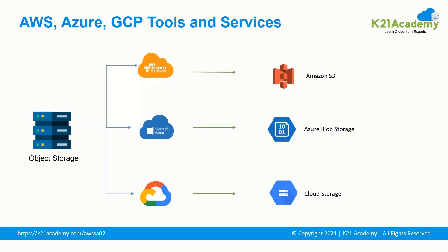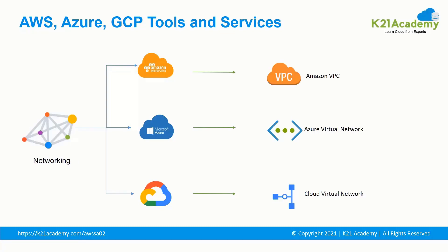Next is object storage, used to store any kind of file in the cloud. In AWS it is Amazon S3, in Azure it is Azure Blob Storage, and in GCP it is Cloud Storage. For networking — IT infrastructure where network capabilities and resources are hosted — in AWS it is Amazon VPC (Virtual Private Cloud), in Azure it is Azure Virtual Network, and in GCP it is Cloud Virtual Network.